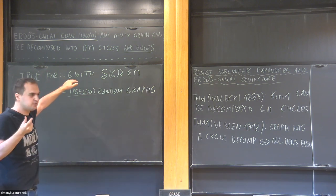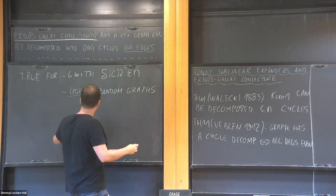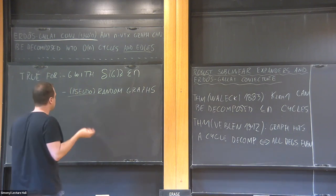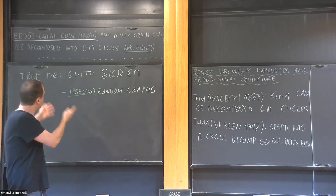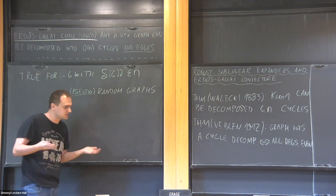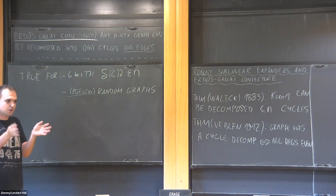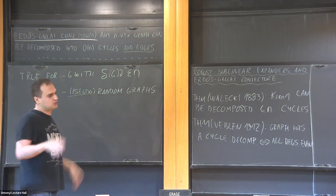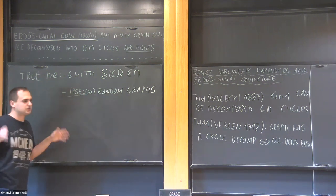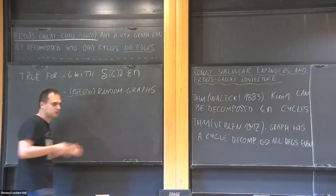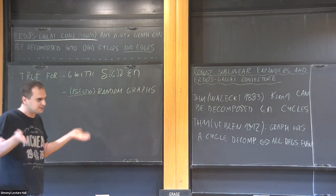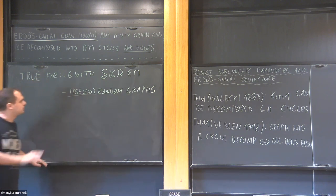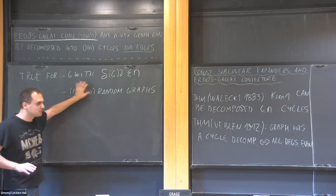These two classes — graphs with a tiny bit of structure (linear minimum degree) and graphs with a lot of randomness (pseudorandom) — place this conjecture in very good company of problems where we know what to do if you have enough randomness or enough structure. The open thing is when you don't have either. Pseudorandom means graphs satisfying properties that random graphs satisfy; you don't really need the graph to be literally random.